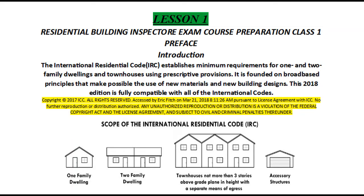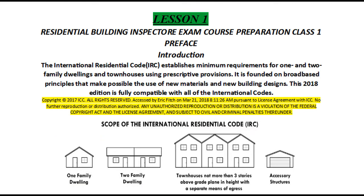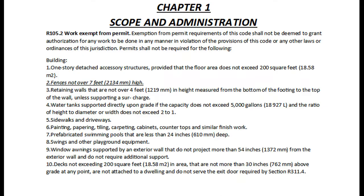Residential Building Inspector Exam Course Preparation Class 1. Preface Introduction. The International Residential Code establishes minimum requirements for one and two family dwellings in townhouses using prescriptive provisions. It is founded on broad base principles that make possible the use of new materials and new building designs. This 2018 edition is fully compatible with all of the international codes.